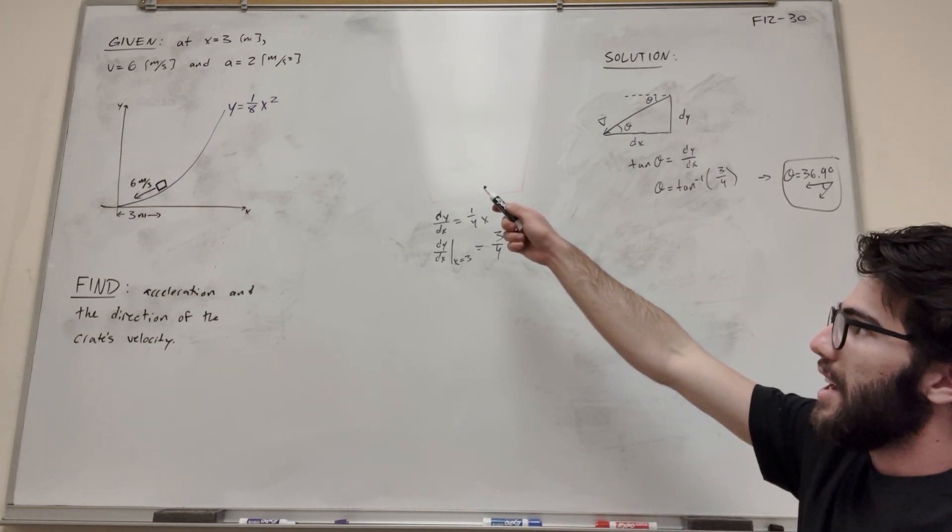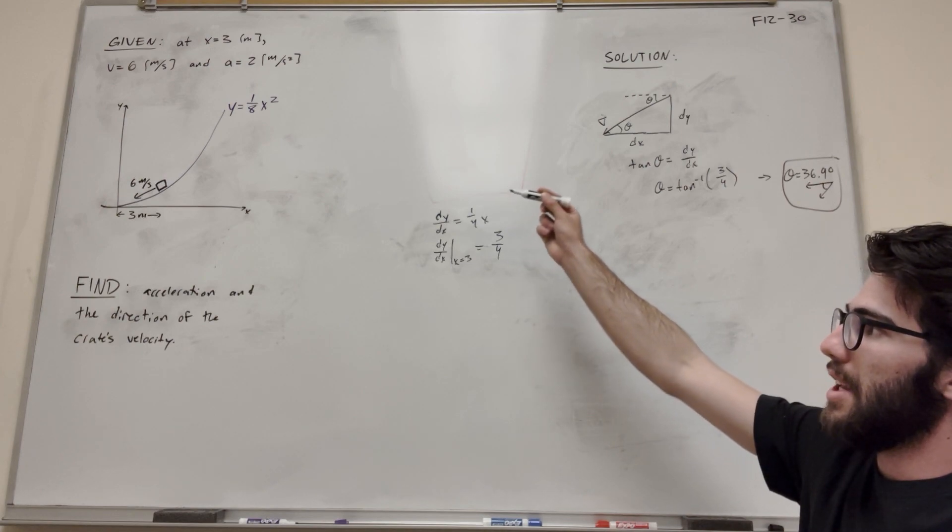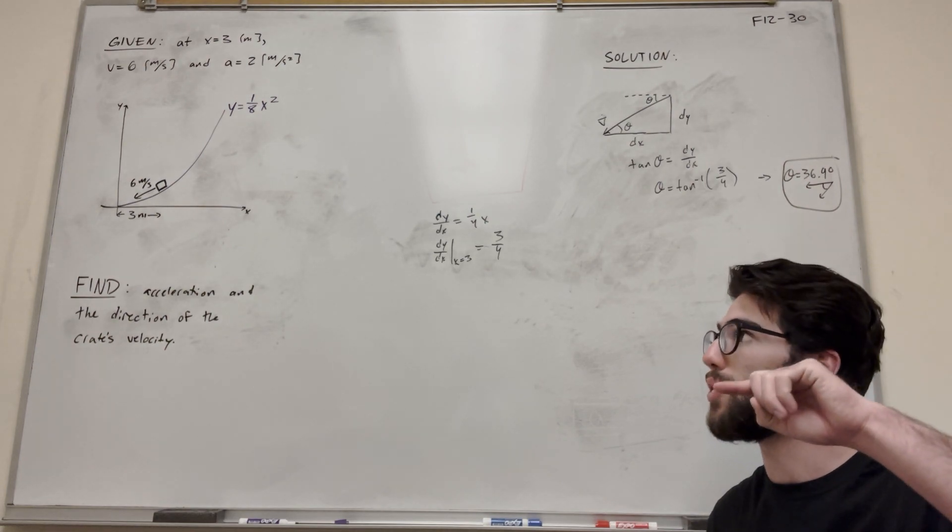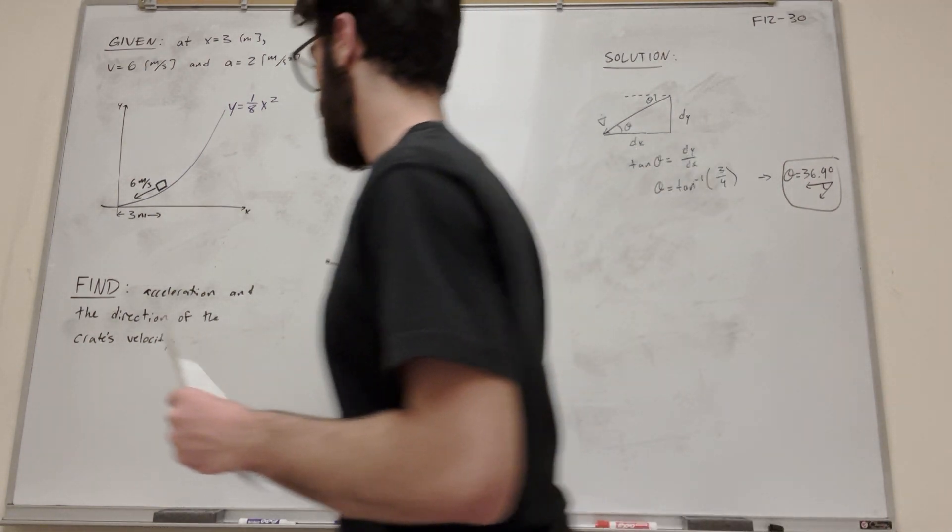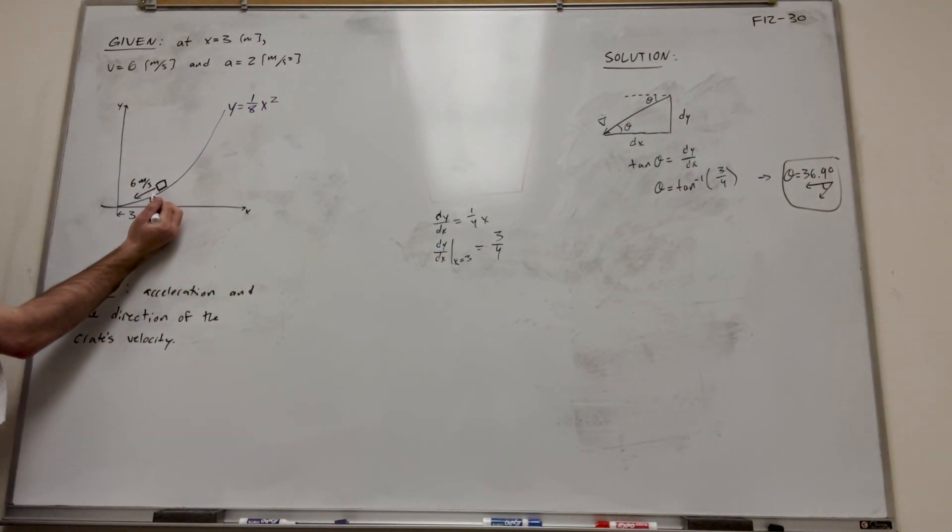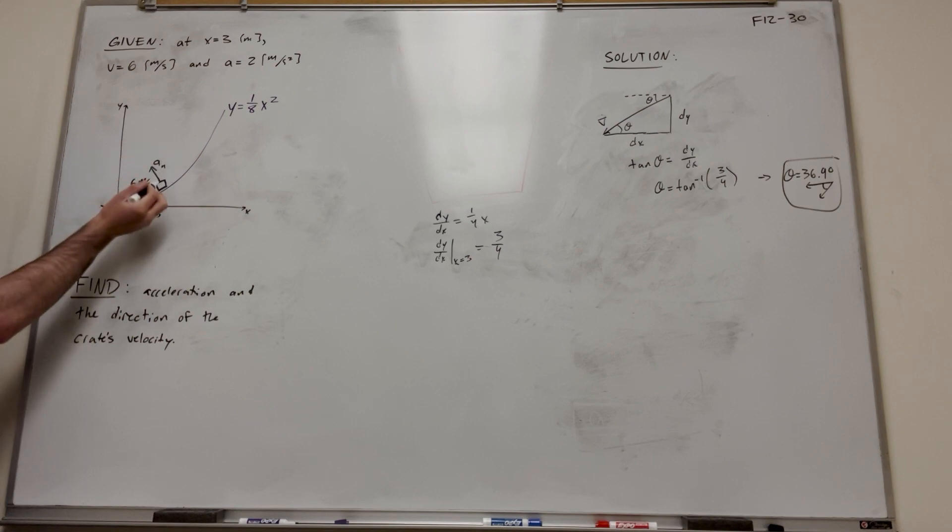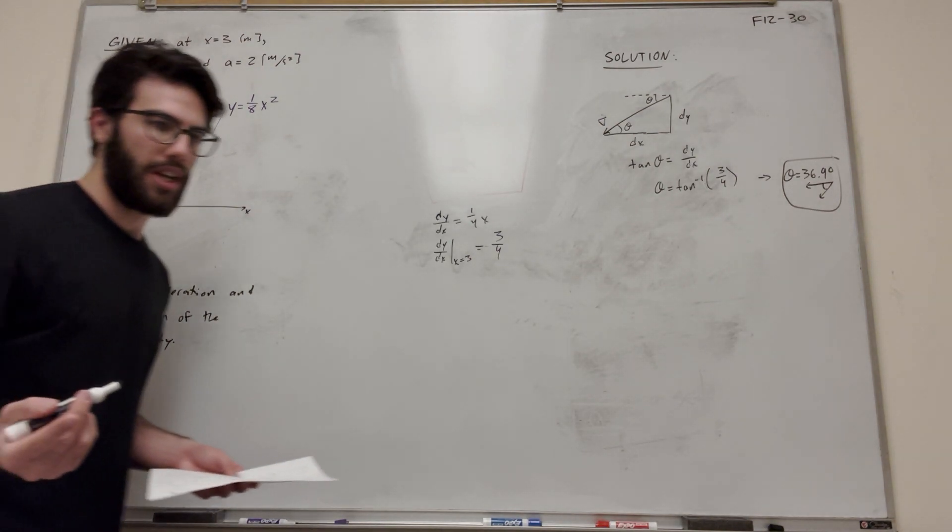So we're given that acceleration is 2 meters per second squared down the hill, but that doesn't account for the acceleration that points normal to the curve. So if we're looking at this, of course we have an acceleration going 2 meters a second here, but because we're on a curve, there's also a normal acceleration going upward. And that's basically what we need to solve for.